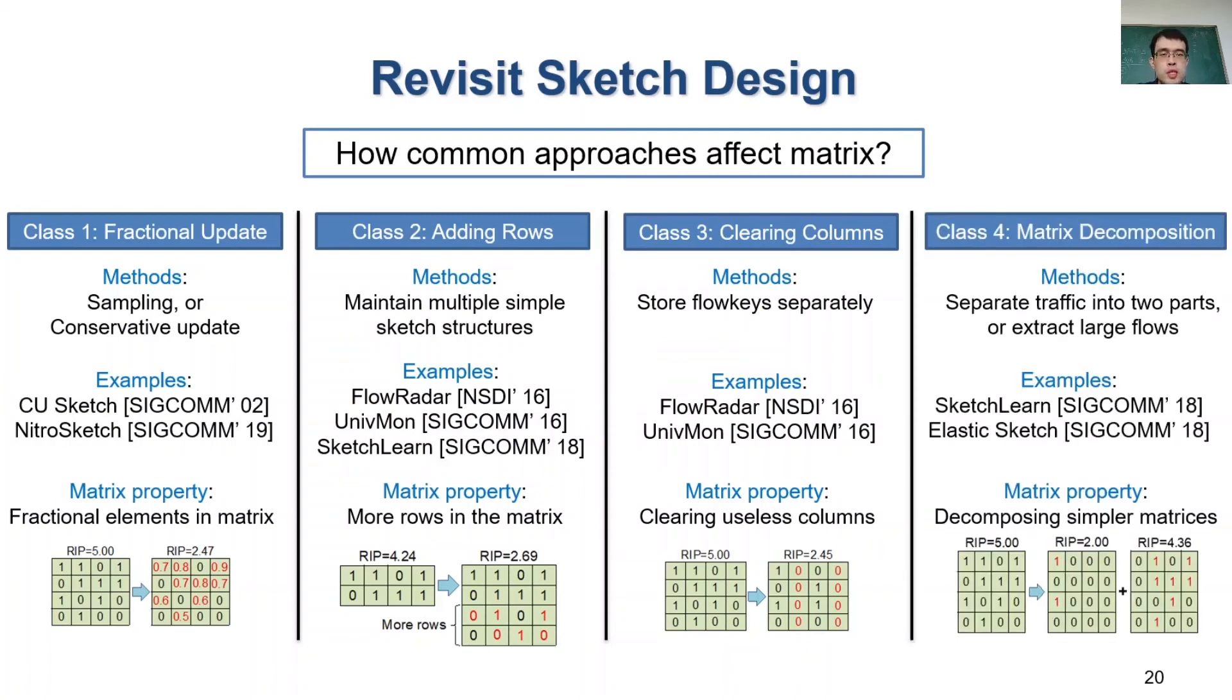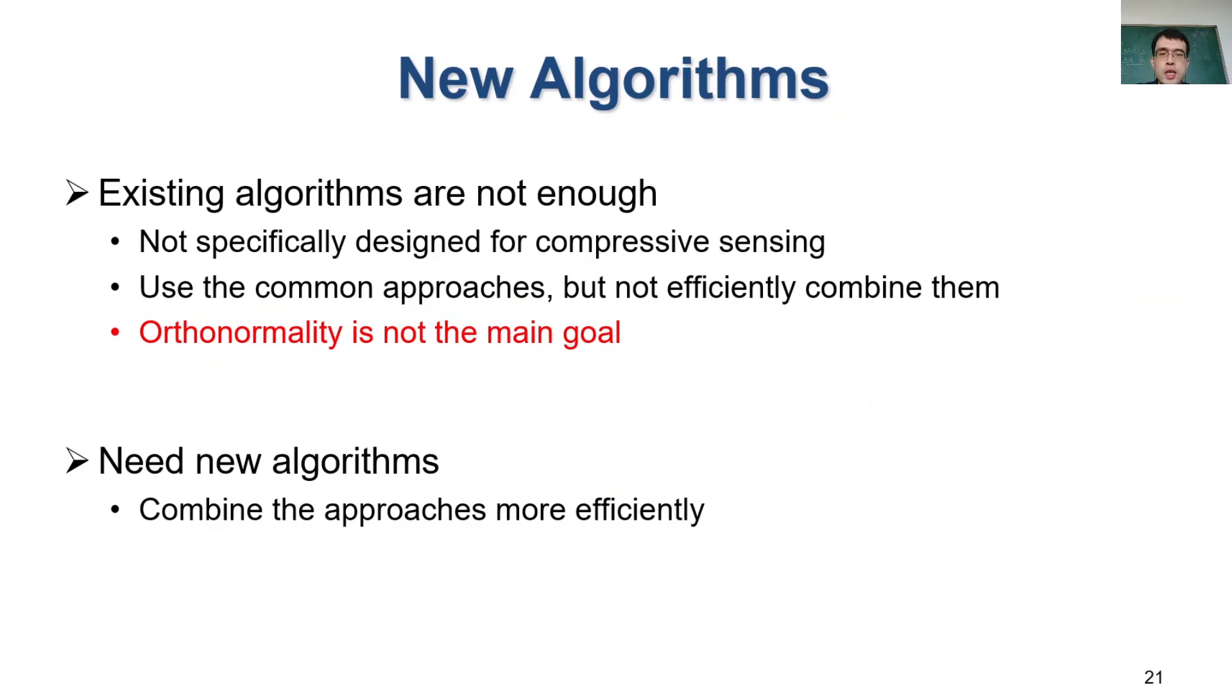Finally, some sketch algorithms split traffic into different portions. This essentially decomposes a sensing matrix into two simple matrices. However, existing sketch algorithms are not specifically designed for compressive sensing. So their usage of these approaches do not improve the orthonormality. So we need to design new algorithms that can assemble the common approaches more efficiently.